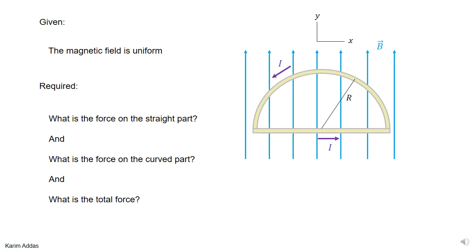This is a simple example applied to the case where you have a loop of wire — a closed loop of wire in the shape of a semicircle, so it has a straight part and a semicircular curved part. The current goes around in a complete loop and it exists in a uniform magnetic field. We want to get the magnetic force on the straight part and the magnetic force on the curved part.